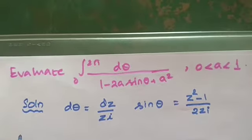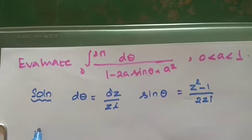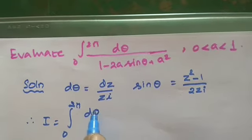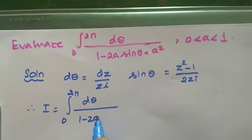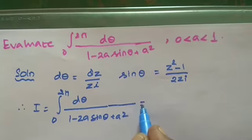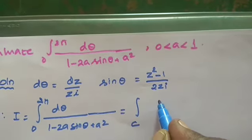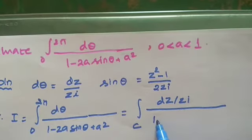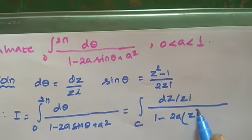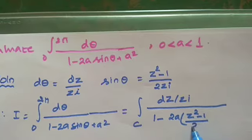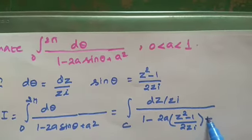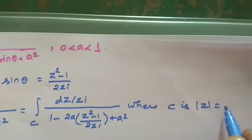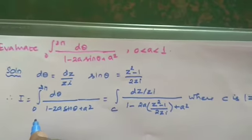Therefore the given integral I equals the integral from 0 to 2π of dθ divided by (1 minus 2a sinθ plus a squared), which becomes the integral over C, where C is the unit circle. We substitute dz by zi, and sinθ equals (z squared minus 1) divided by 2zi, plus a squared, where C is the unit circle mod z equal to 1 with center at origin and radius 1.